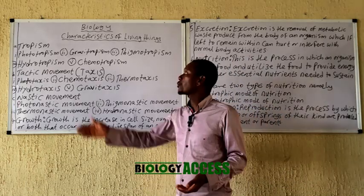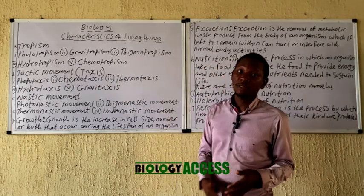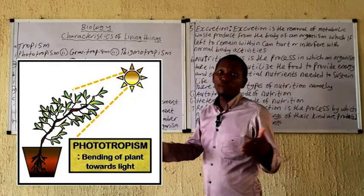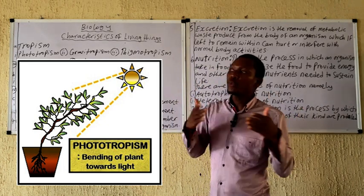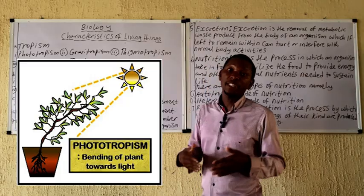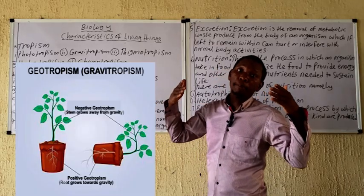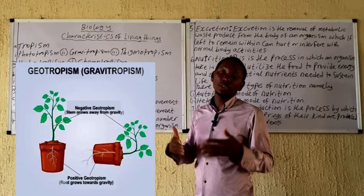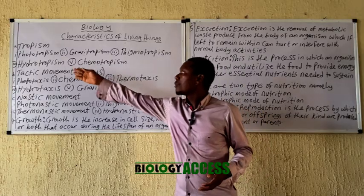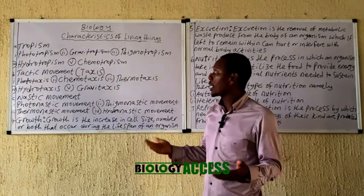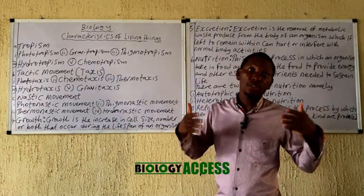We have various kinds of tropism: phototropism, gravitropism, thigmotropism, hydrotropism, and chemotropism. Phototropism is the directional movement of plant parts either towards or away from a light stimuli. Gravitropism is the directional movement of plant parts towards the stimuli of gravity. Hydrotropism is the directional movement of plant parts towards the stimuli of water. Chemotropism is the directional movement of plant parts towards the stimuli of chemicals.